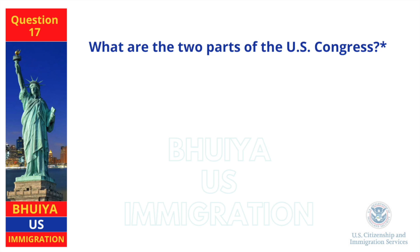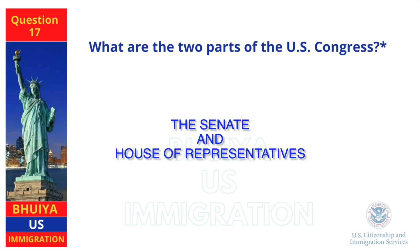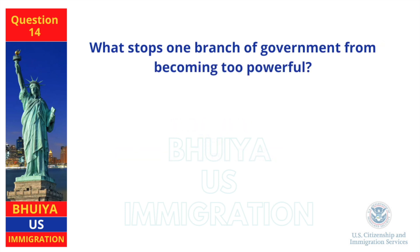What are the two parts of the U.S. Congress? The Senate and House of Representatives. What stops one branch of government from becoming too powerful? Checks and balances.